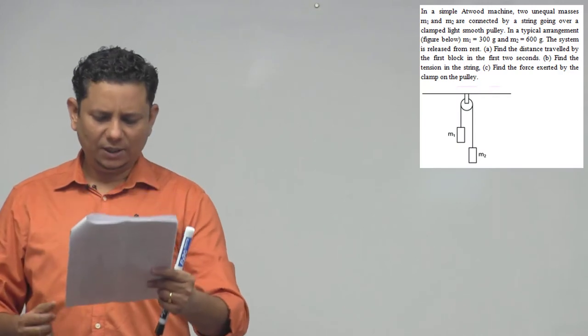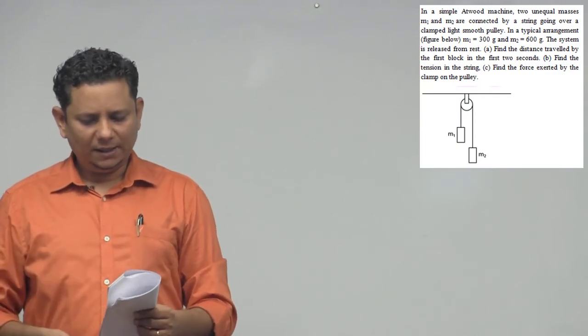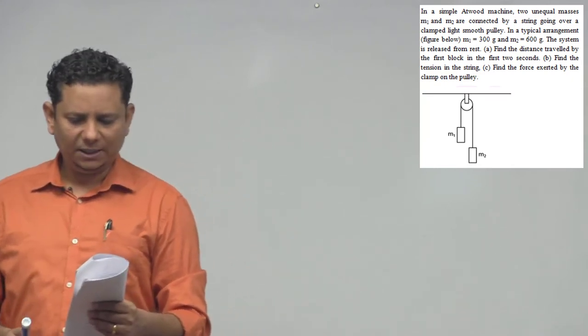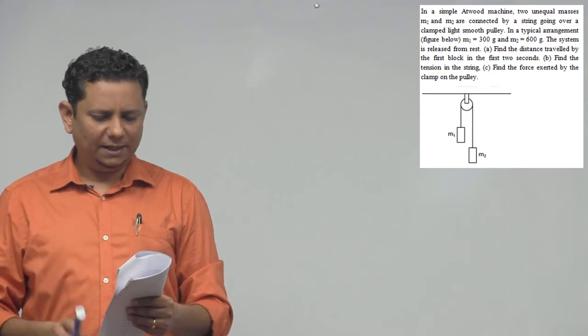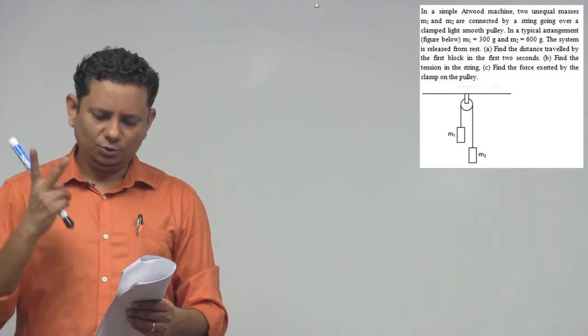Our next question says in a simple Atwood machine two unequal masses m1 and m2 are connected by a string going over a clamped light pulley. In a typical arrangement, m1 is 300 grams and m2 is 600 grams. The system is released from rest. Find the distance traveled by the first block in the first two seconds.